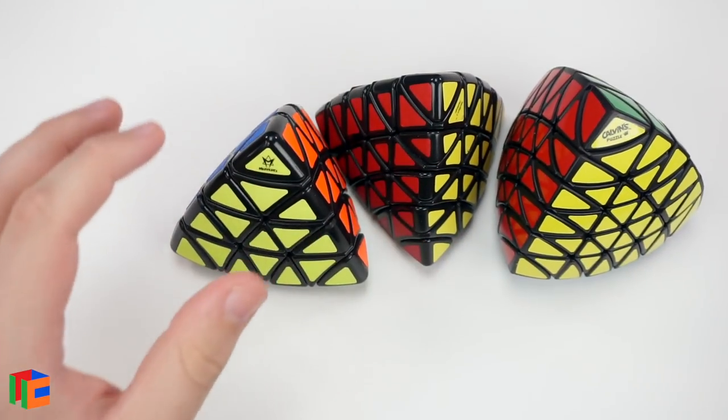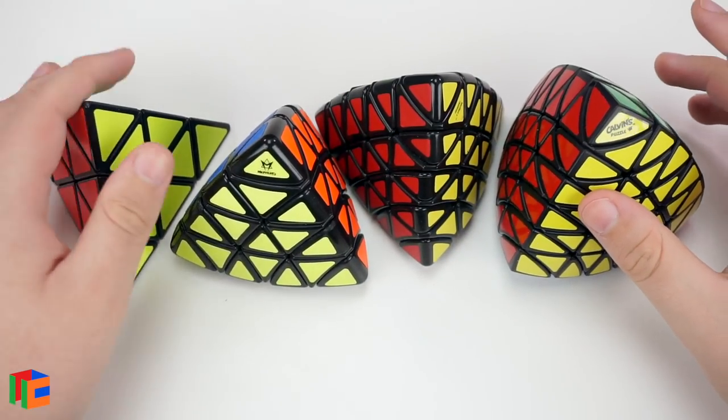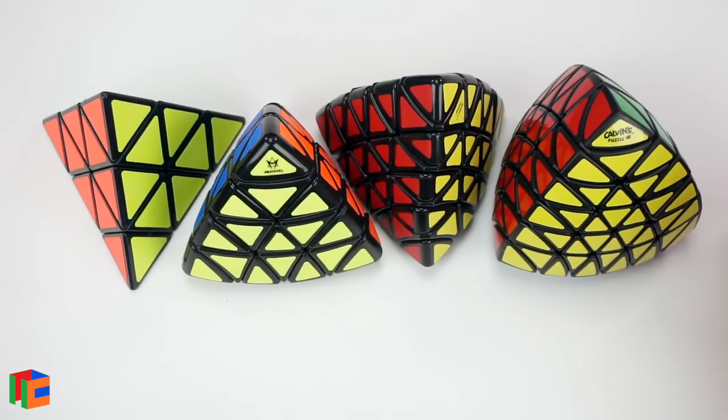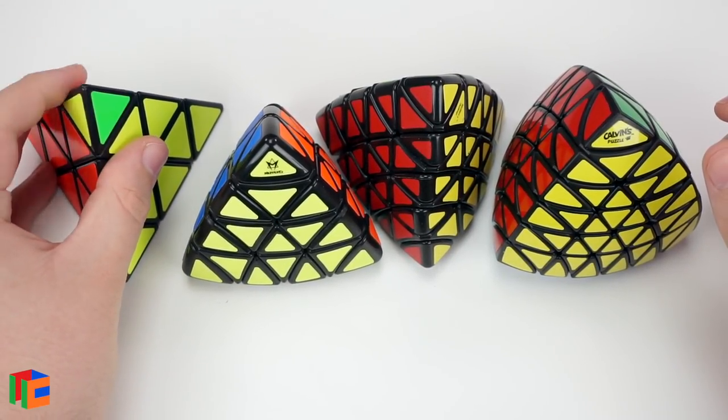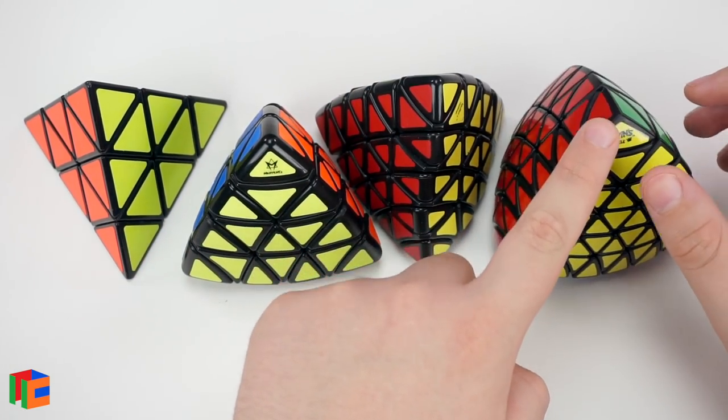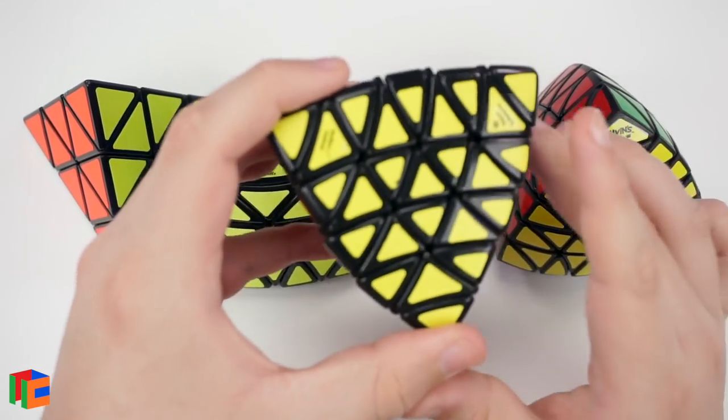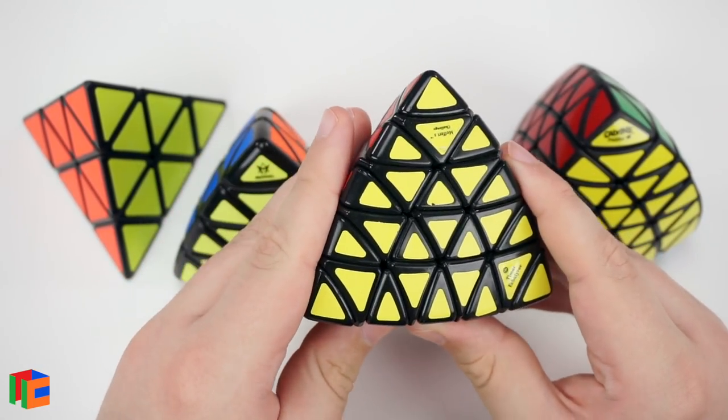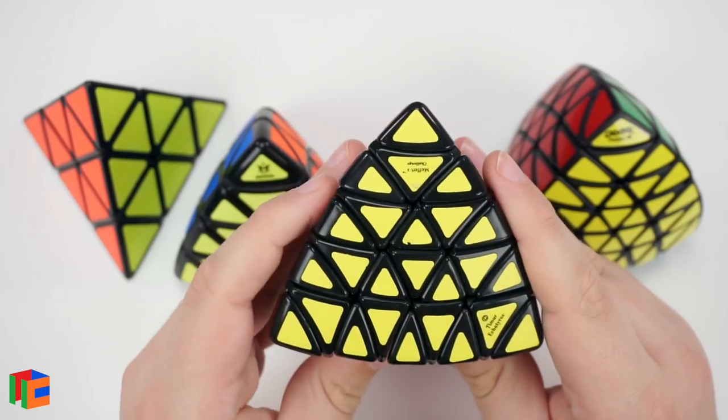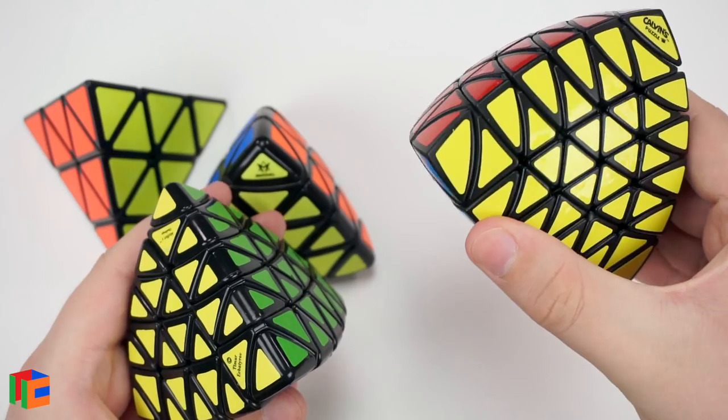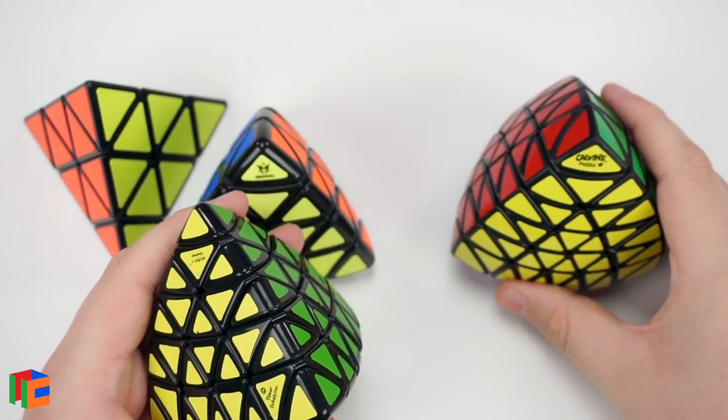We have, actually let's get the regular Pyraminx in here as well. We've got a 3 layer, 4 layer, 5 layer, and now a 6 layer minx puzzle. If you don't count the tip, because the tip doesn't really act as a layer, then you have 2 layer, 3 layer, 4 layer, and 5 layer. But I consider this to be the 5 layer simply because it is called the Professor Pyraminx, and Professor's Cube originally was the name of the 5x5. So I consider this to be a 5 layer minx puzzle, which makes this the 6 layer one.